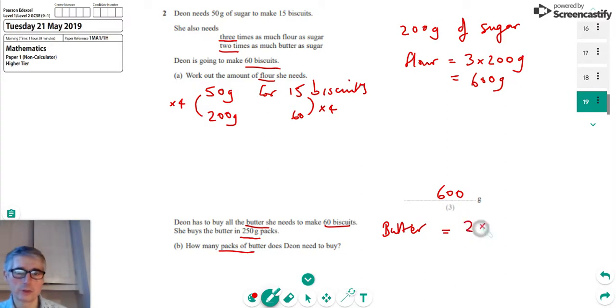But she can only buy butter in 250 gram packs, so how many packs will she need? We can see that she's got to buy the least amount of packs that goes over or equals 400.